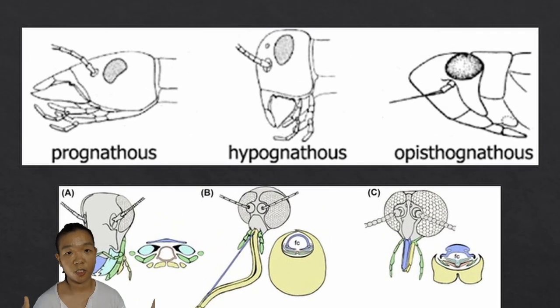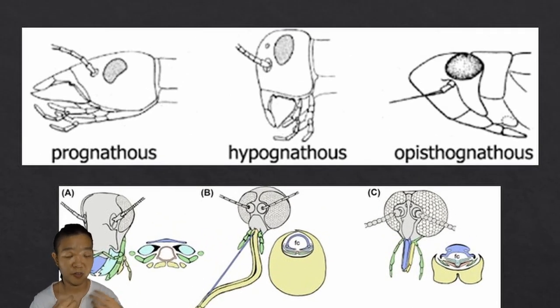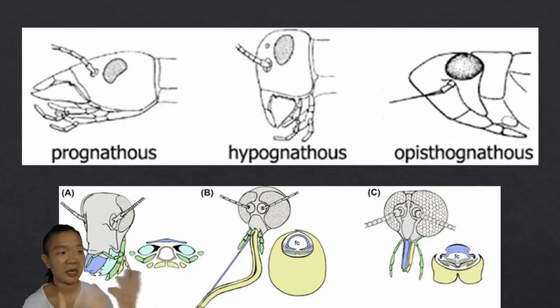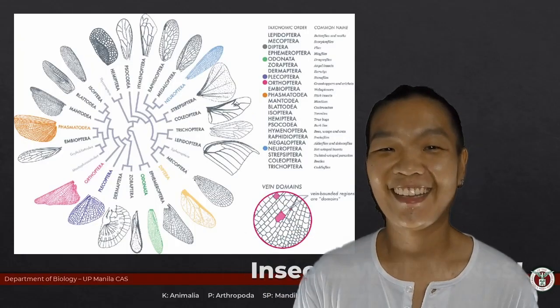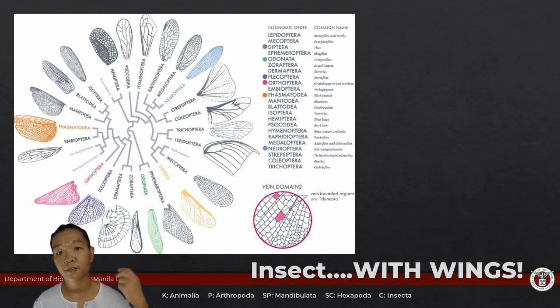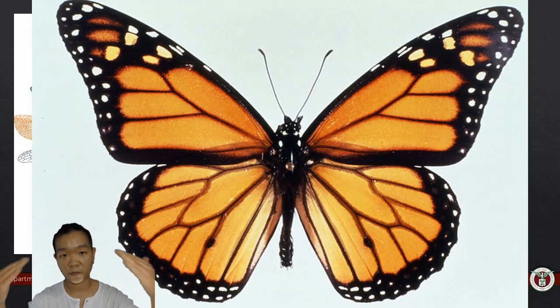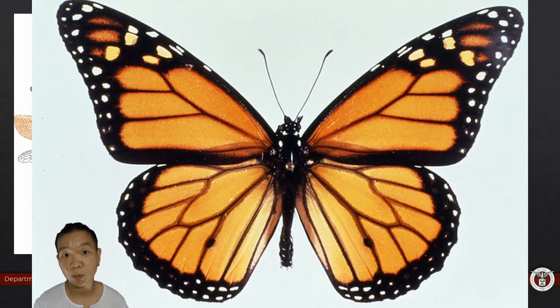Aside from the morphology of the mouth parts, the position of the mouth parts can also vary across different insect groups — hypognathous, opisthognathous, prognathous. That's all; it just tells you the position of the mouth part. Insect wings usually come in pairs of two: you have the front wings or the fore wings, and then the ones behind them are the hind wings.